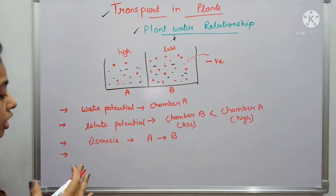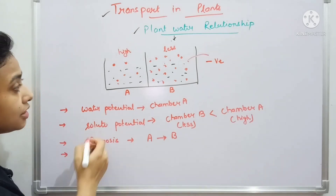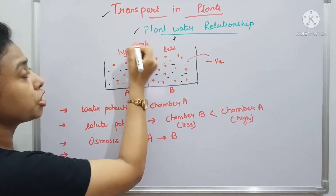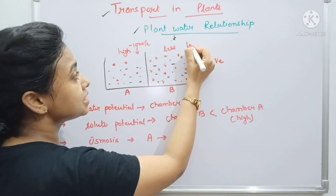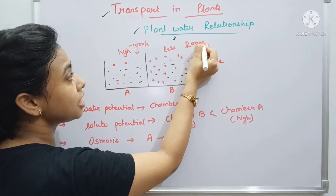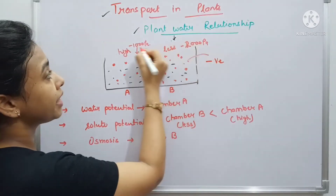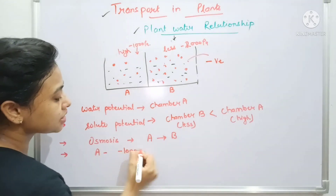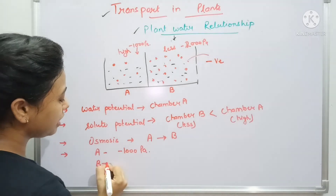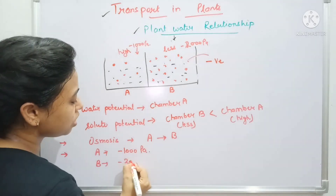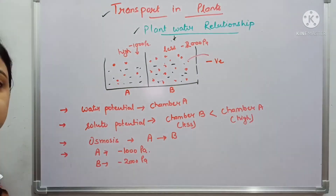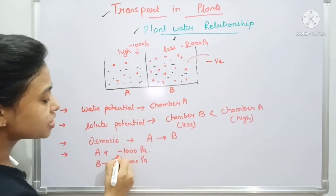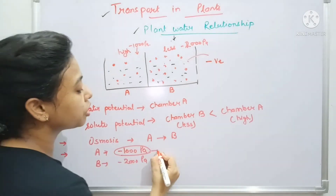For a numerical example: if chamber A has a water potential of −100 Pa and chamber B has a water potential of −200 Pa, then chamber A has the higher water potential because −100 is greater than −200 on the negative scale.